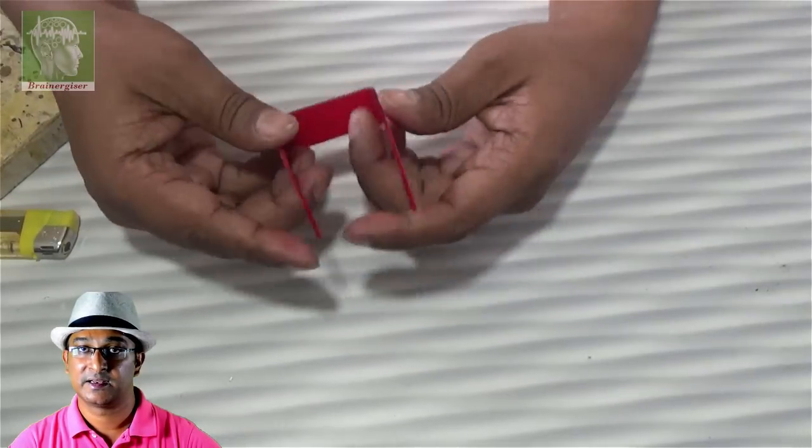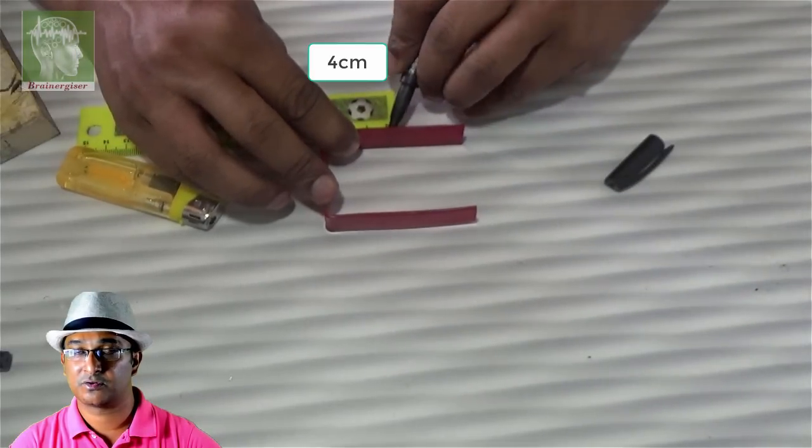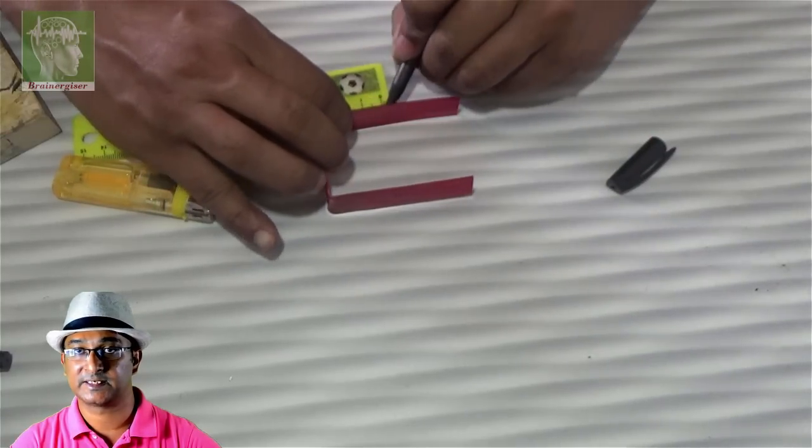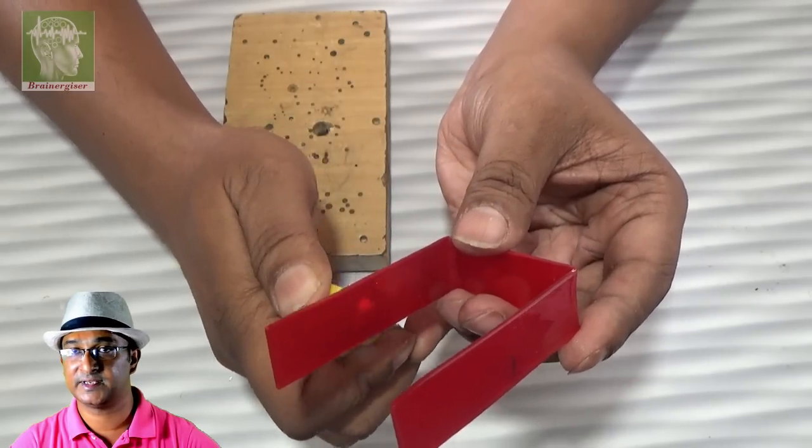Once this is done, you have to bend around four centimeters away, again both the sides. So heat it up and bend like an angle of 30 degrees.